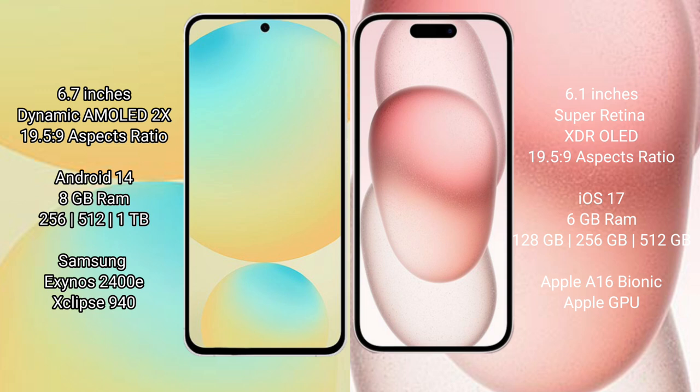iPhone 15 comes with 6GB RAM and 128GB, 256GB, or 512GB internal storage. Samsung Galaxy S24 FE features the Exynos 2400E processor with an Xclipse 940 GPU. iPhone 15 is powered by the Apple A16 Bionic processor with Apple's integrated GPU.